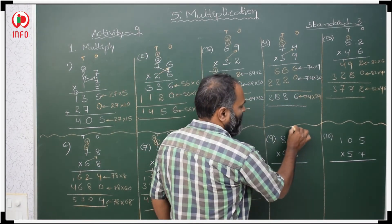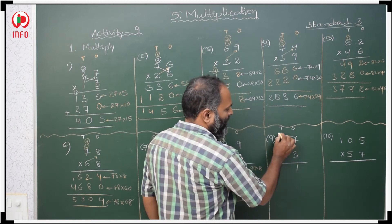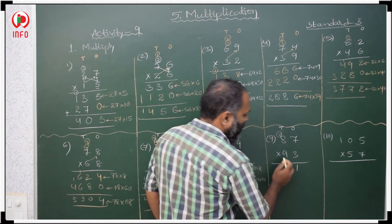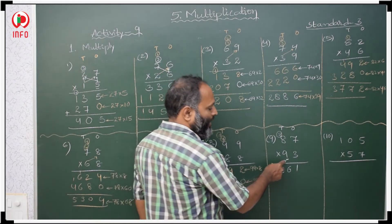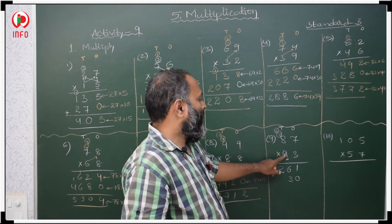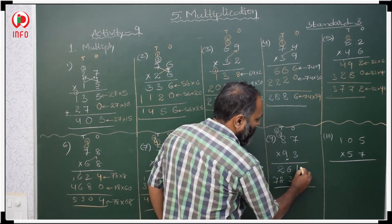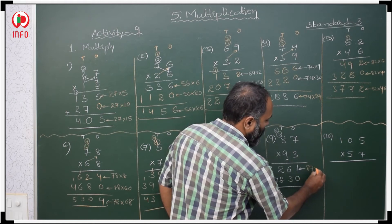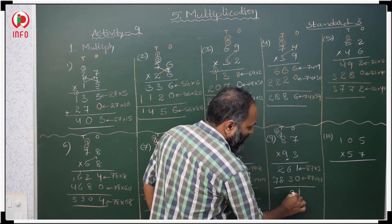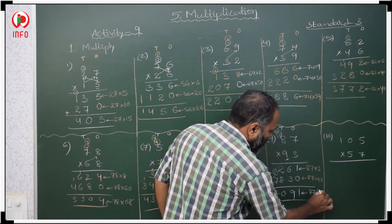Now: ones place, tens place. First 3: 3 sevens are 21, write 1 carry 2 tens. 3 eights are 24, 24 plus 2 is 26. Now start with 9 in tens place, keep 0 first. 9 sevens are 63, write 3 carry 6; 9 eights are 72, 72 plus 6 is 78. This is the product of 87 with 3, and the product of 87 with 90. Adding gives the product of 87 with 93.